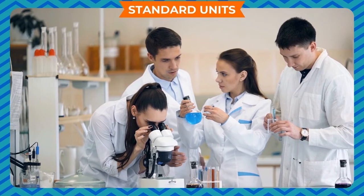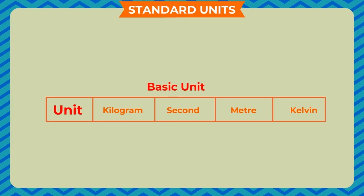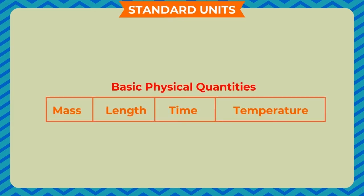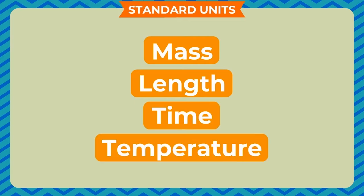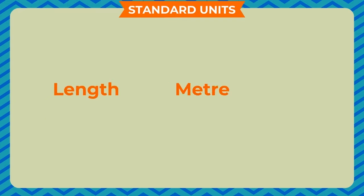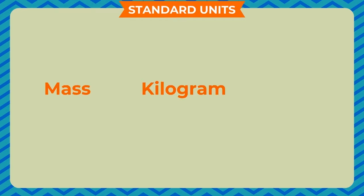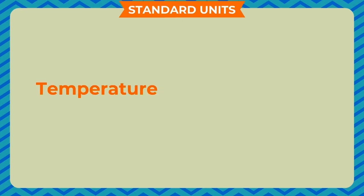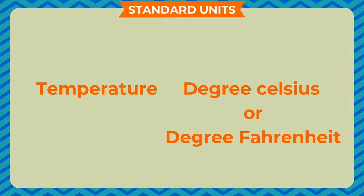Scientists all over the world have accepted a basic set of units for measuring the basic physical quantities — mass, length, time, temperature, etc. This set of units is called the International System of Units, generally referred to as SI units. According to SI units, the fundamental unit of length is meter (m), the standard unit of mass is kilogram (kg), the standard unit of time is second (s), and the standard unit of temperature is kelvin (K). Generally, thermometers measure temperature in degree Celsius or degree Fahrenheit.